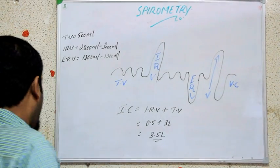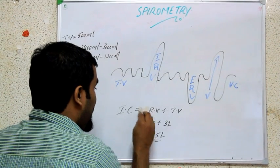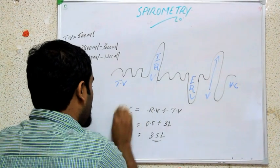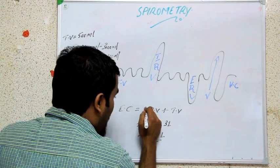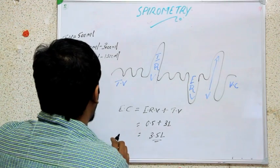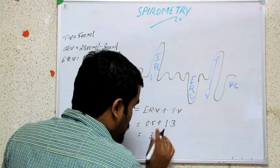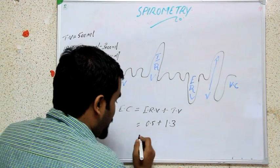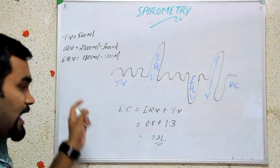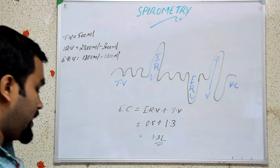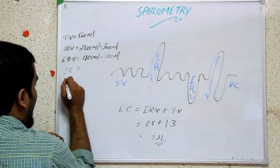In the same manner, expiratory capacity equals ERV plus TV. ERV is around 1.3 liter plus TV 0.5 liter, giving approximately 1.8 liter. If we just memorize the basic values, we can find all other values easily.